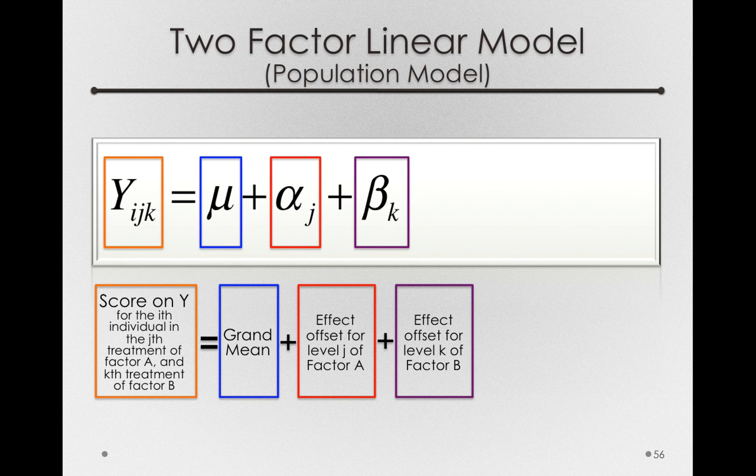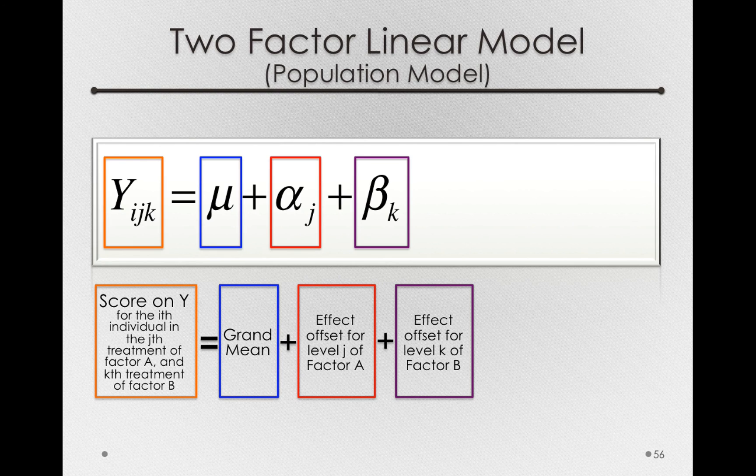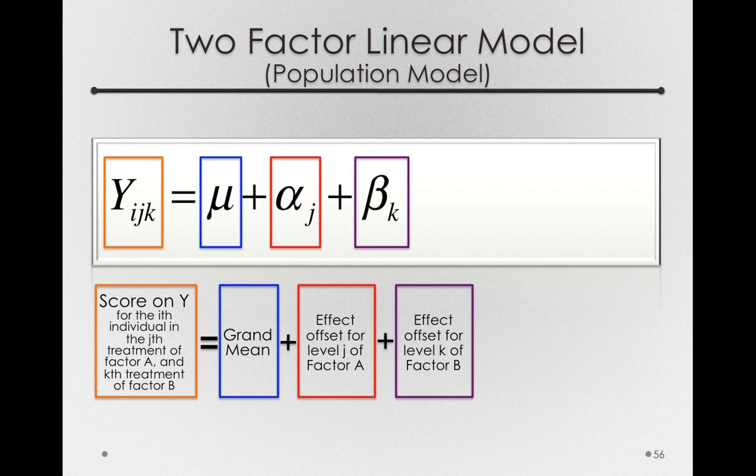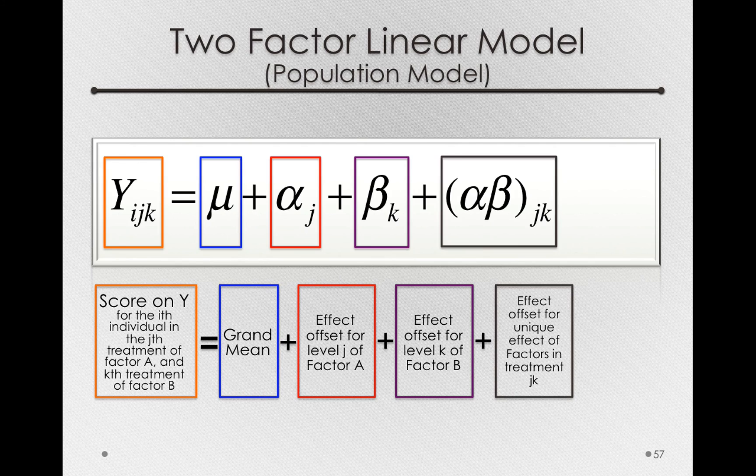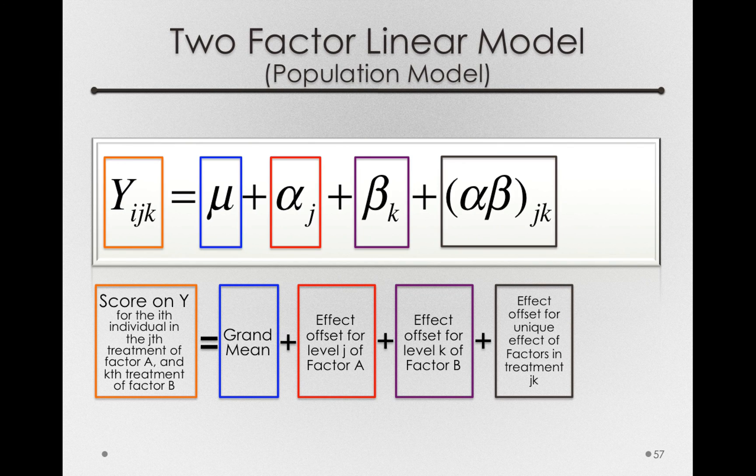Our next term will refer to the interaction offsets. That is, the degree to which the effect of one of our factors depends on the level we're in of the other factor. And our notation for this is customarily written as the alpha-beta_jk's. These are the effect offsets for the unique effects of the factors in treatment jk.